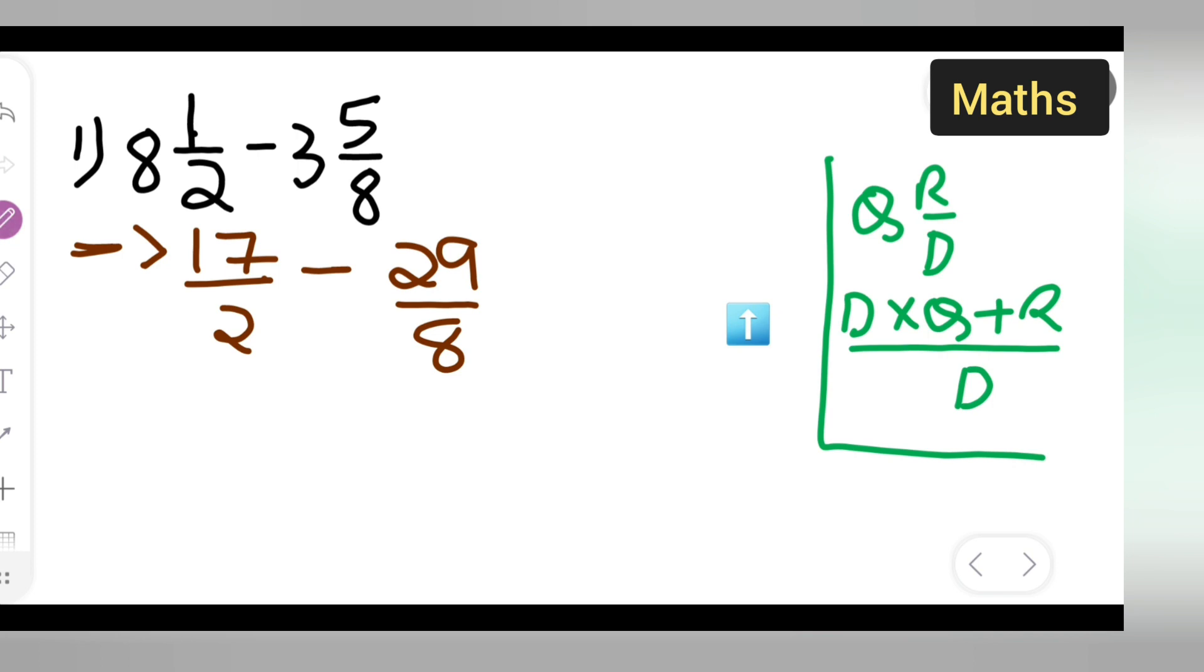Now you have to multiply this. When we are subtracting and the denominator is not the same, we cannot subtract. First we have to make the denominator the same.